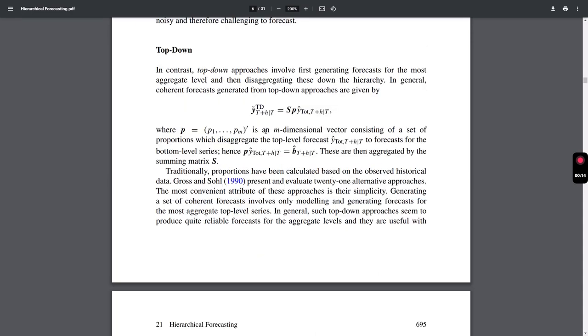We can also use top-down, which instead of starting from the bottom, starts from the top, using the forecasted time series from the upper levels to progressively predict the lower levels in the hierarchy. However, top-down approaches seem to be highly reliable for these levels, but fail to capture characteristics of lower-level time series.